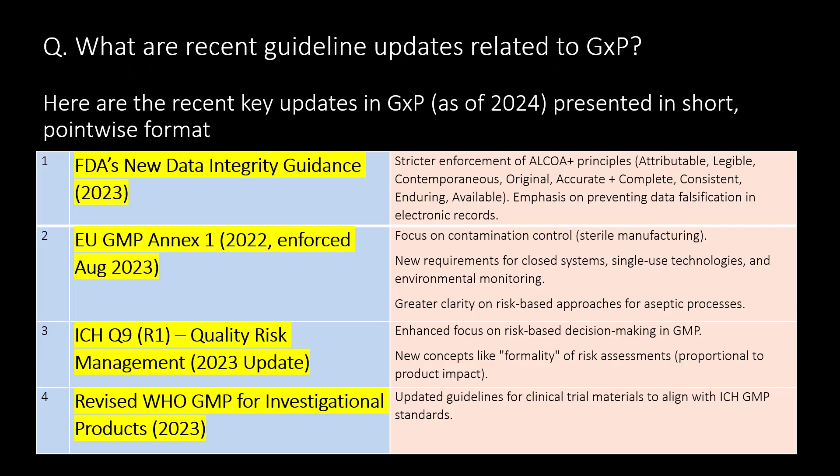A very important question: what are recent guideline updates related to GXP? Here are the recent key updates as of 2024 in short: FDA New Data Integrity Guidance 2023, US GMP Annex 1 2022, ICH Q9(R1) Quality Risk Management 2023 update, and revised WHO GMP for Investigational Products 2023.